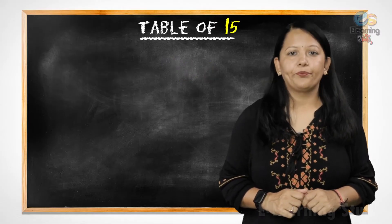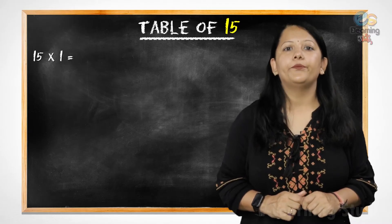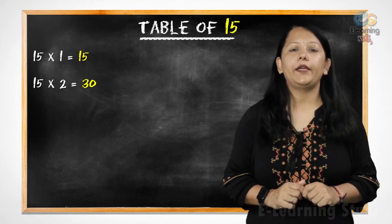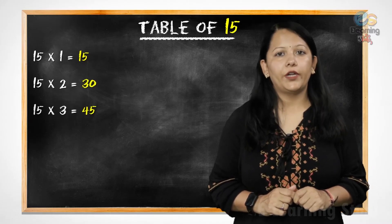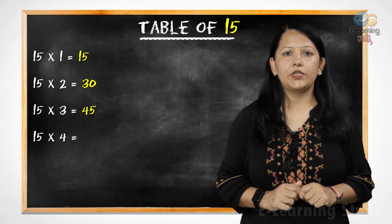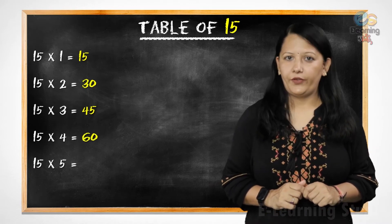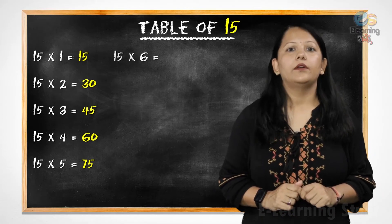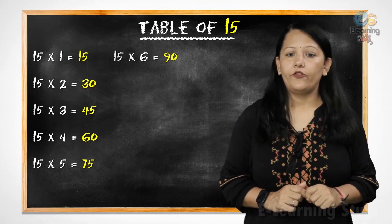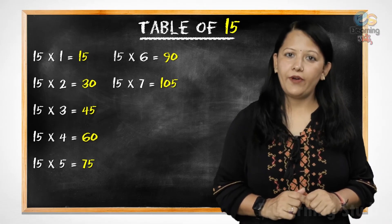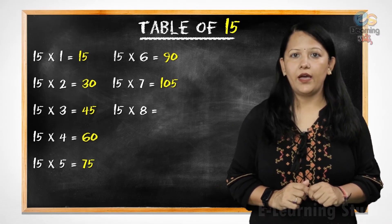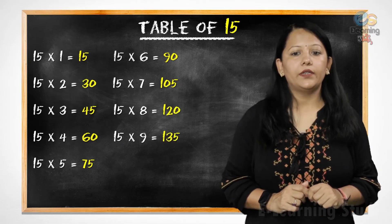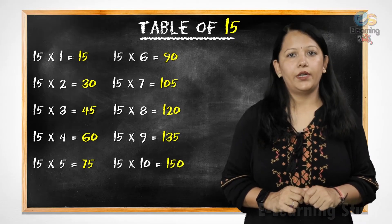Now, let's revise it. 15 ones are 15. 15 twos are 30. 15 threes are 45. 15 fours are 60. 15 fives are 75. 15 sixes are 90. 15 sevens are 105. 15 eights are 120. 15 nines are 135. 15 tens are 150.